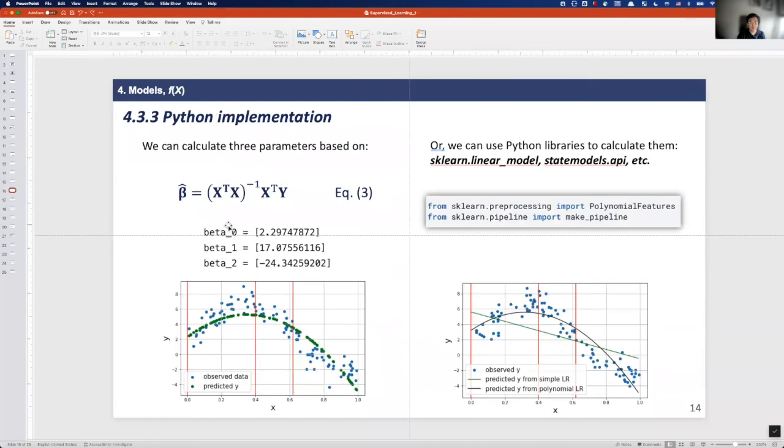With equation 3 here, we can calculate three betas: beta 0, 1, and 2.